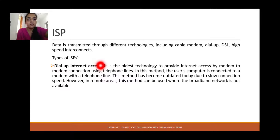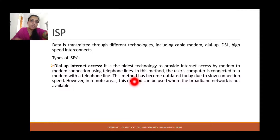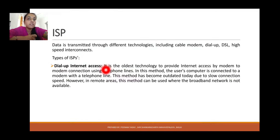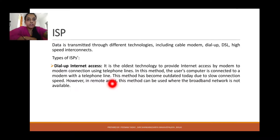Types of internet service providers. First is dial-up internet access. This is a previous technique used to provide internet access by modem-to-modem connection using a telephone line. In this method, the user's computer is connected to a modem with a telephone line. This method has become outdated today due to slow connection speed.